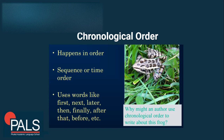Some students might ask: what is the difference between sequence and chronological order? They are related, but chronological order focuses more on events rather than simple steps. Your clue is to look for events, or words related to time — like months, dates, hours, or years. If you find those time-specific words, that's another sign the text is organized using chronological order structure.